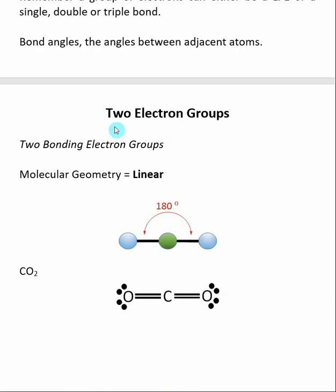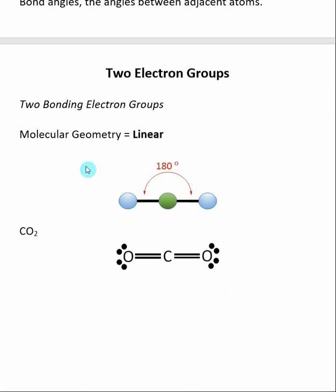When a central atom has two groups of electrons, there's really only one case, and that's where both groups of electrons are bonding. The molecular geometry is called linear, and a good example of this is CO2. The central atom has two sets of bonding electron groups, and the bond angle is 180 degrees. So the oxygen-carbon-oxygen bond angle is 180 degrees, which makes the overall molecule linear.